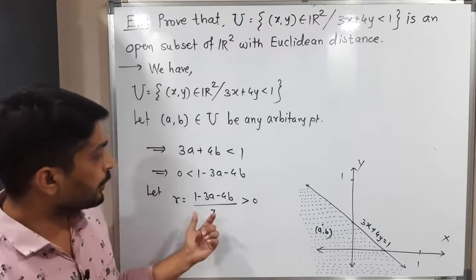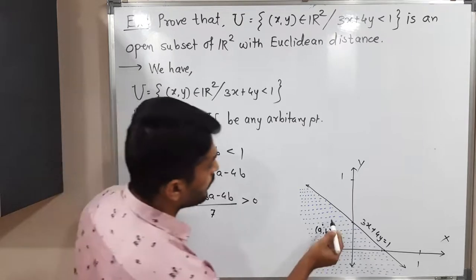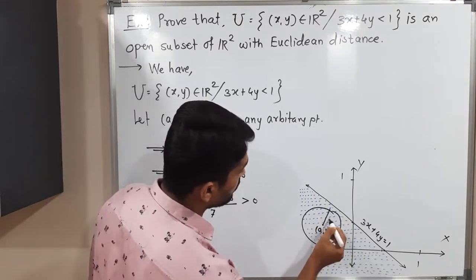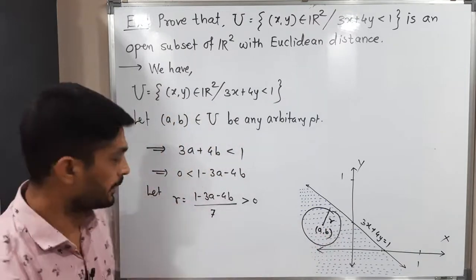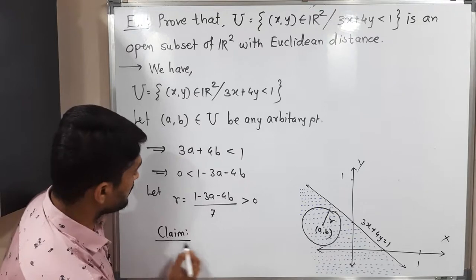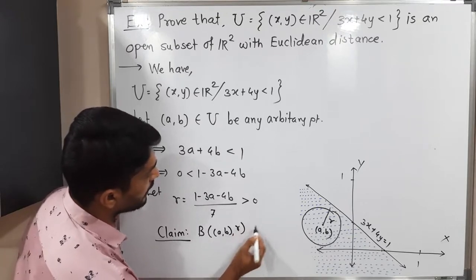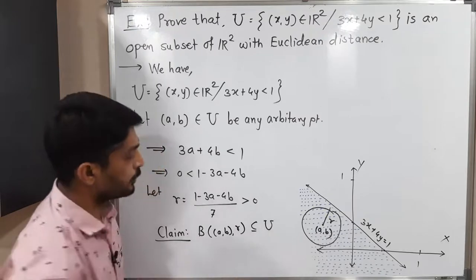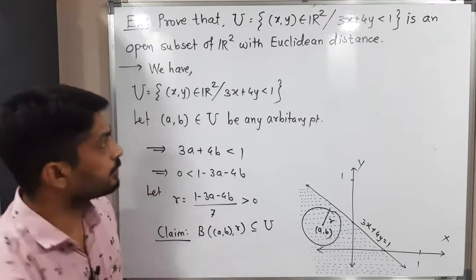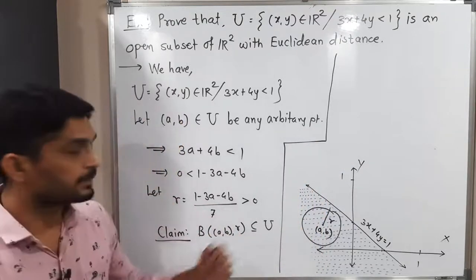We have found an r > 0. Now we have to prove that the open ball with center (a, b) and radius r is a subset of U. So our claim is: the open ball with center (a, b) and radius r is a subset of U. Don't forget the definition of r. Let us go further — to prove one set is a subset of another, we have a technique.